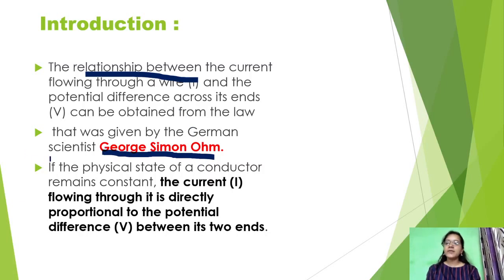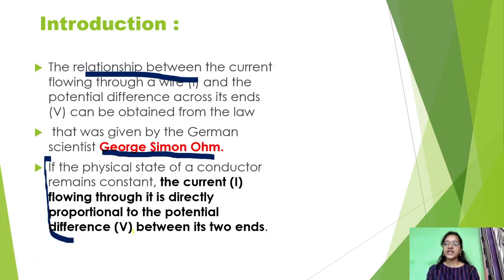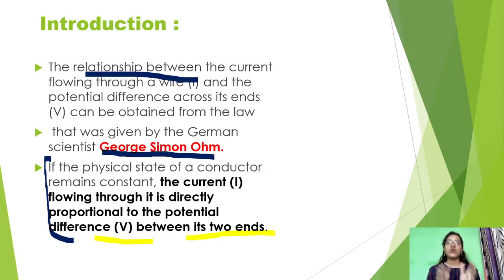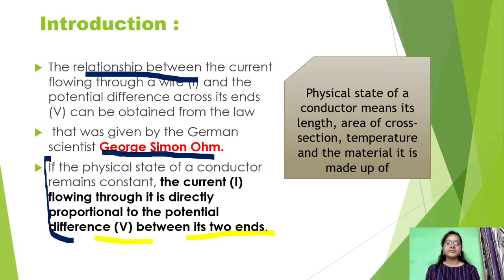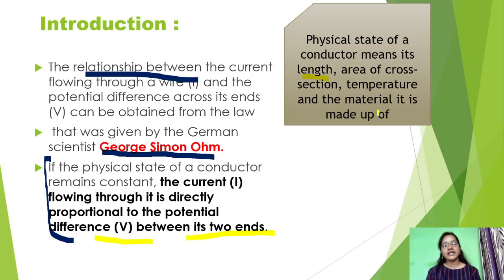What was the statement? If the physical state of the conductor remains constant, the current flow is directly proportional to the potential difference. So the potential difference between the two ends of the conductor will be directly proportional. Here, the physical state means the length of the conductor, the area of cross section, the temperature, and the material the conductor is made of.